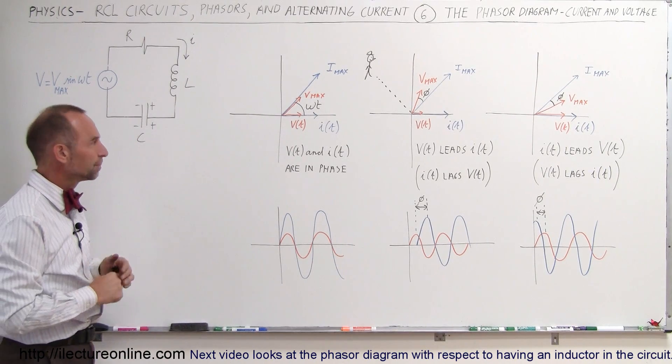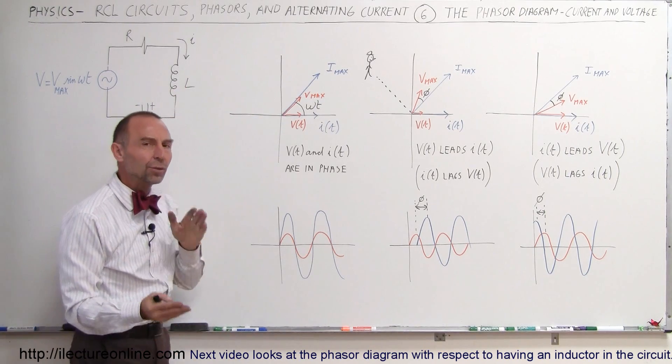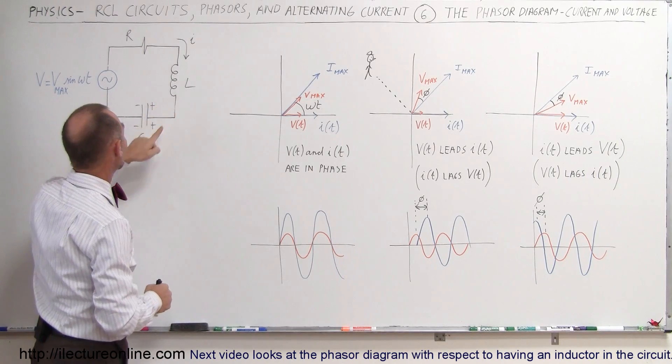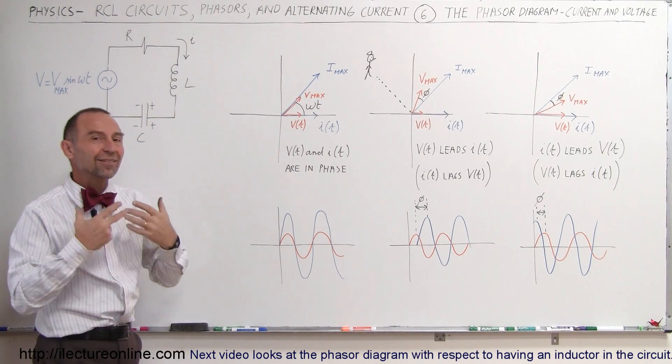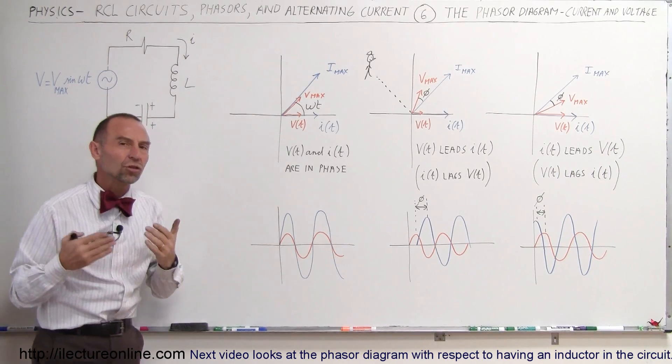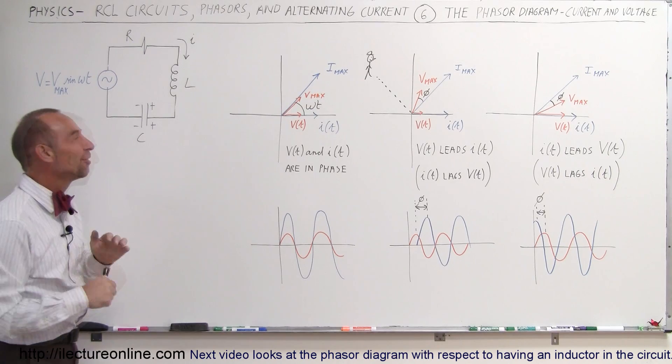Now what does that tell us? In an RCL circuit, if we have something that looks like this, where both the voltage and the current are in phase, that means that the inductor and the capacitor cancel each other out, and the net result is as if there's only a resistor in the circuit. That's usually done when we reach what we call the resonant frequency.